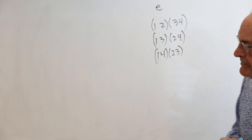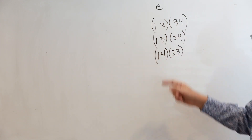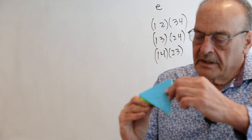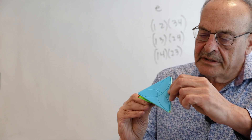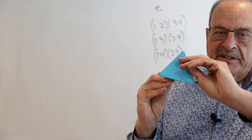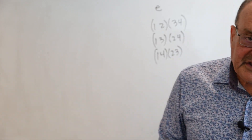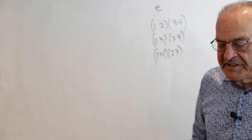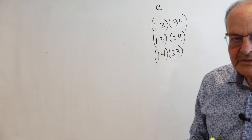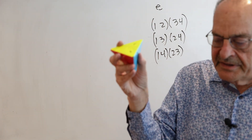So three of those symmetries are listed right now, and they come from twisting opposite edges. There's three different pairs of opposite edges. There's another symmetry that's easiest of all, and it's just E — that's when you do nothing. Doing nothing is actually a symmetry.